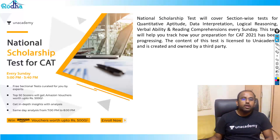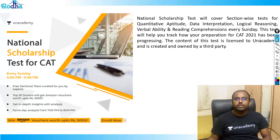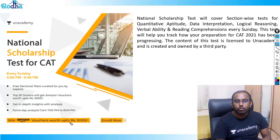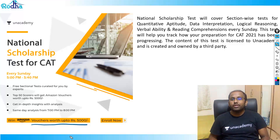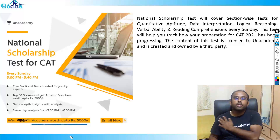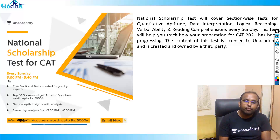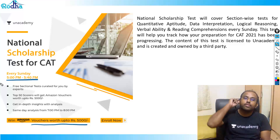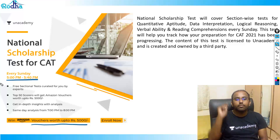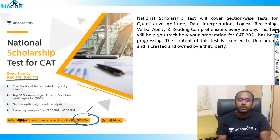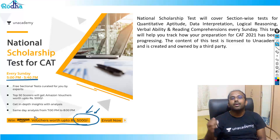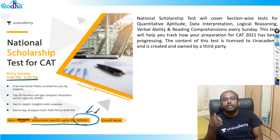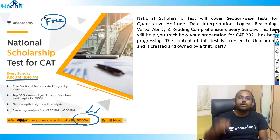Before that, some information on NST — the Nation Scholarship Test. It has become very popular; people are winning Amazon vouchers. It's a free test held every Sunday from 5 to 5:40 p.m. — one Sunday for quant, one for LRDI, one for verbal — and it gives you a good ranking of your current standing among all aspirants.